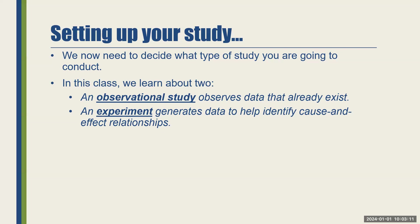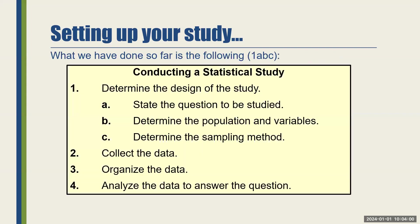The next thing to decide is what sort of study to conduct. In this class we learn about two types: observational studies, where data is observed and already exists, and experiments, which generate data and help identify a cause and effect relationship. Write this down: experiments are the only things that identify or establish cause and effect relationships. That's going to come back in Chapter 12. The only way to establish cause and effect is with an experiment.